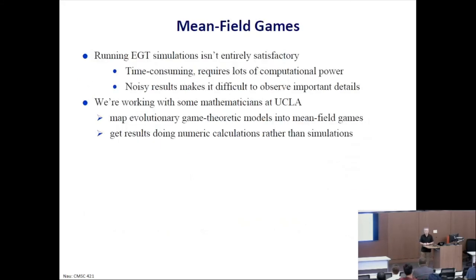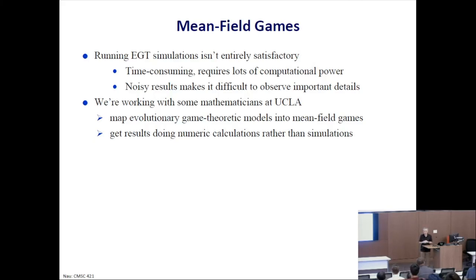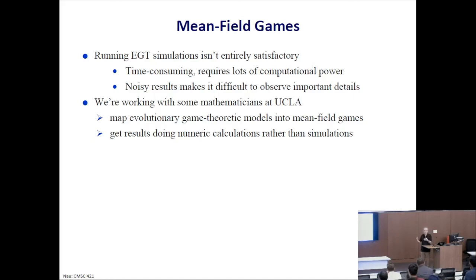One of the problems with running these evolutionary game-theoretic simulations is that they are time-consuming and require a lot of computational power. Another problem is that the results are noisy — you run a bunch of simulations, you average the results, you still have noise in the data, which makes it difficult to observe some of the details. So we're currently working with some mathematicians at UCLA to map evolutionary game theory into another mathematical formalism called mean field games. The hope is that by doing that, we'll be able to use mean field game-theoretic models instead of doing simulations to get much more accurate results much more quickly.